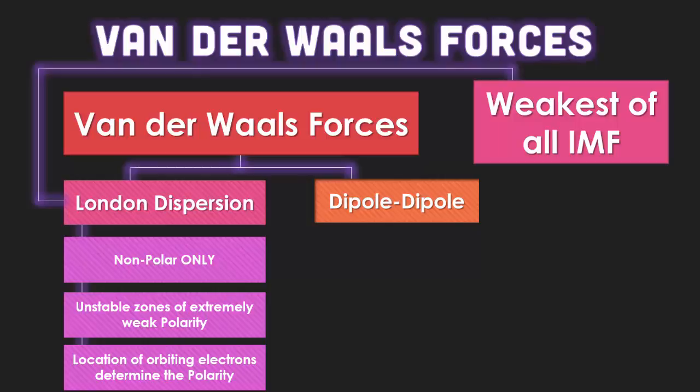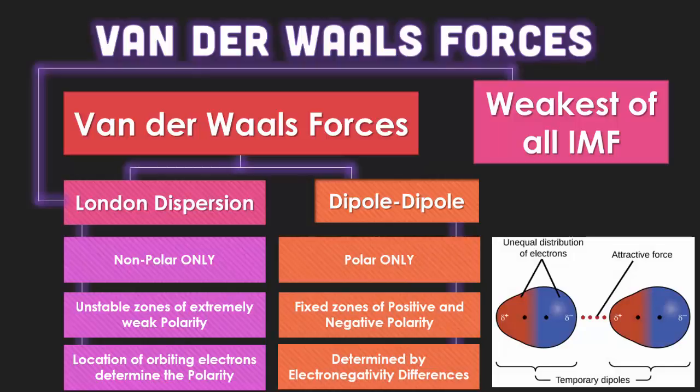When we talk about dipole-dipole attractions, we're talking about polar molecules. Because they are dipoles — two poles, two positive or negative charges — they have fixed zones of positive and negative polarity. We can determine that by electronegative differences. The more electronegative you are, you're going to be blue, the negative force. If you're losing electrons, you're going to be red, the positive force. Between two molecules, the negative sides will be attracted to the positive side of another molecule.